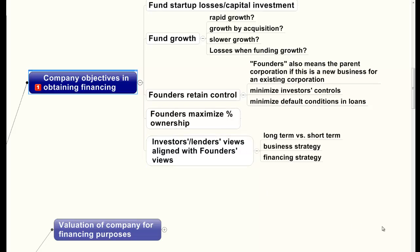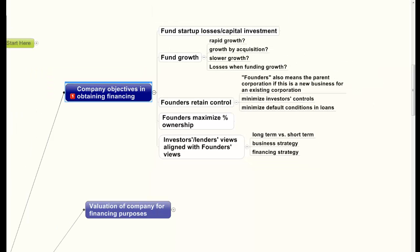The investors' and lenders' views are often not aligned with the founders' views, and this is often very difficult to detect when the company is approaching investors and so forth. Most investors have a short-term viewpoint of three to five years, while most founders have a much longer viewpoint. The business strategy employed by founders often differs with the strategy that investors believe the founders should use, and the financing strategy going forward may be very different in the eyes of founders versus investors. It's important to find out if those strategies and views can be aligned.